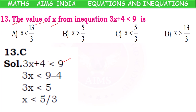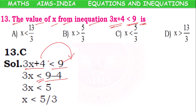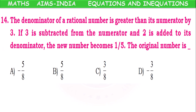The value of x from the inequation 3x + 4 < 9: take +4 to the other side as −4 — the relation does not change. 9 − 4 = 5, so 3x < 5. Divide both sides by 3: x < 5/3. Option C is the correct answer.